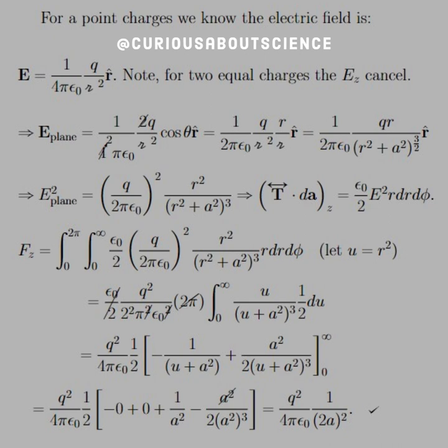We see that that reduces to 4 to 2, and we can sub in the definition for cosine. Then we see that the plane squared, E² for the plane, we just square the constants, and we get rid of that square root. So now we see that the part that goes into the force equation, the stress tensor-wise, is equal to ε₀/2 E² rdr dφ.